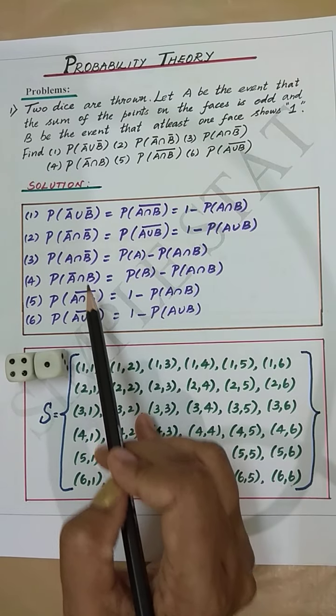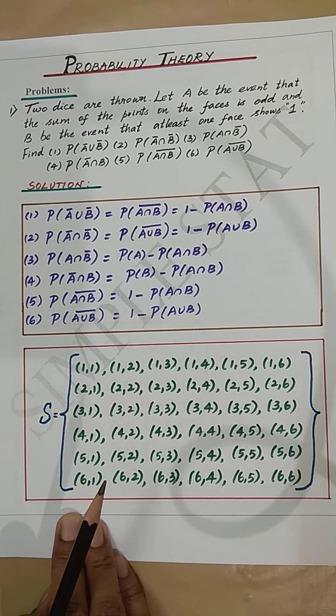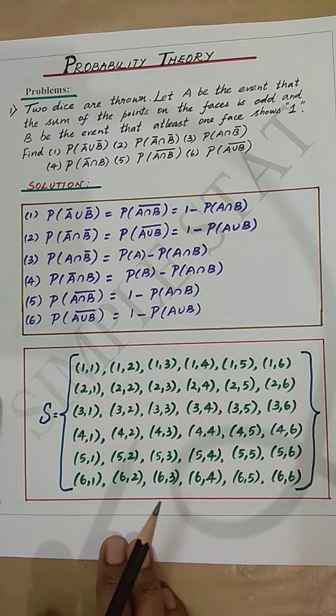Let's proceed with the solution. We know all the simple theorems as discussed in the previous videos. When two dice are thrown, this is the sample space and there are 36 possible outcomes. The first step is to find probability of A, probability of B, probability of A union B, and probability of A intersection B.